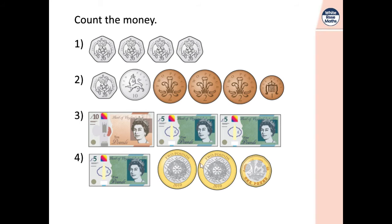And then number four is a mix of notes and coins. So we've got a five pound note, two two pound coins and a one pound coin. So let's see if you got those right. So you had 80 pence, 37 pence, 20 pounds and 10 pounds. Well done if you got those.